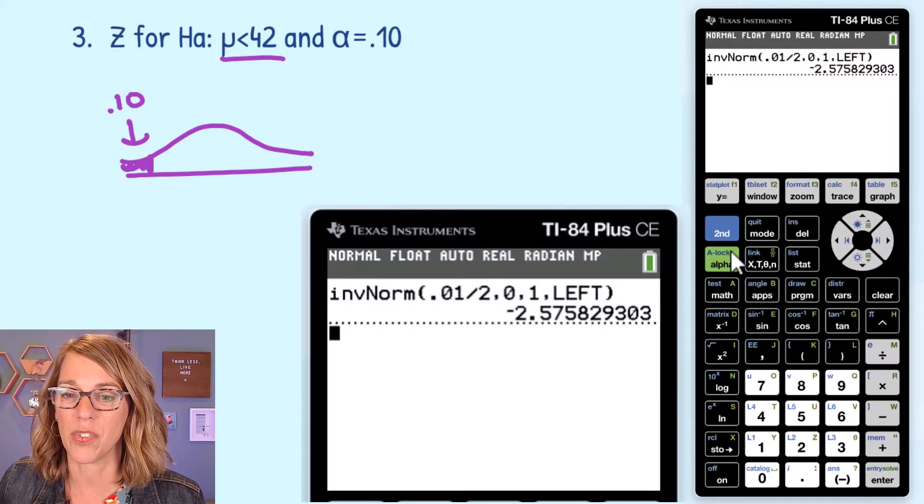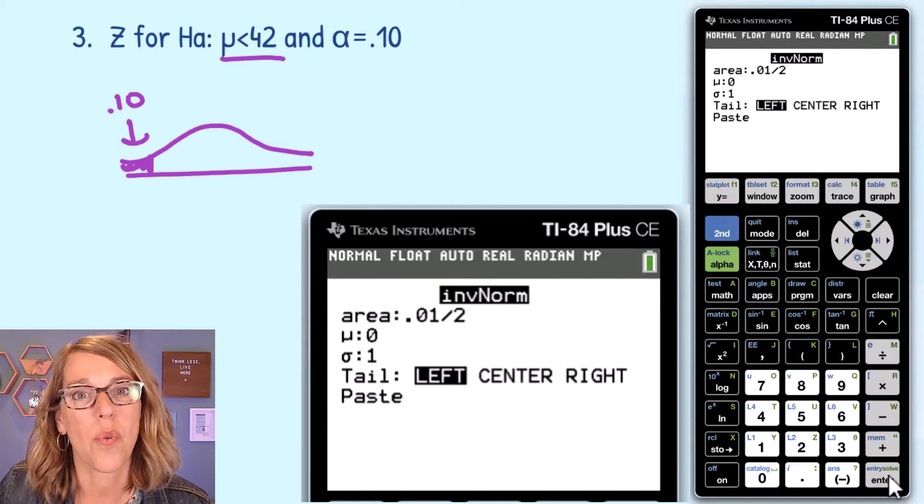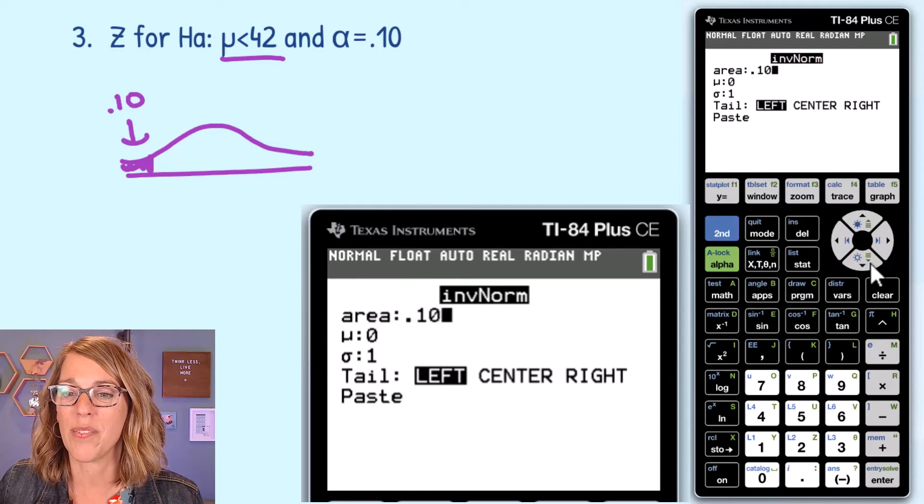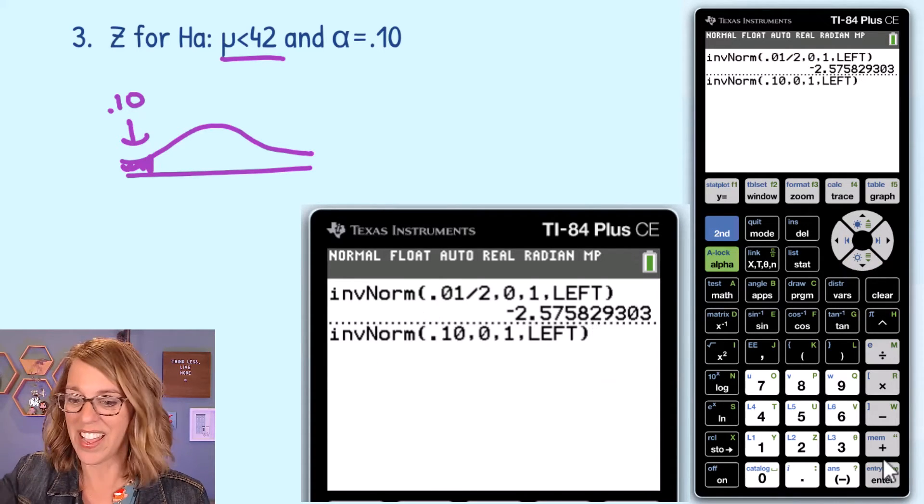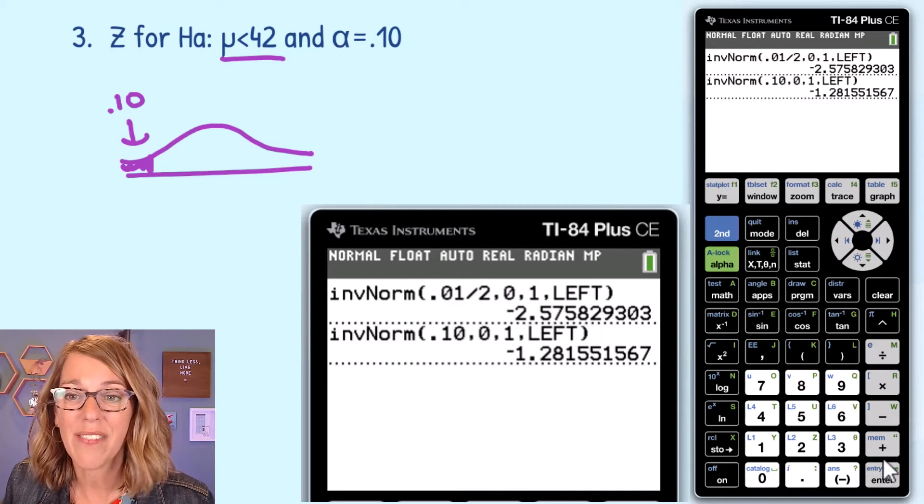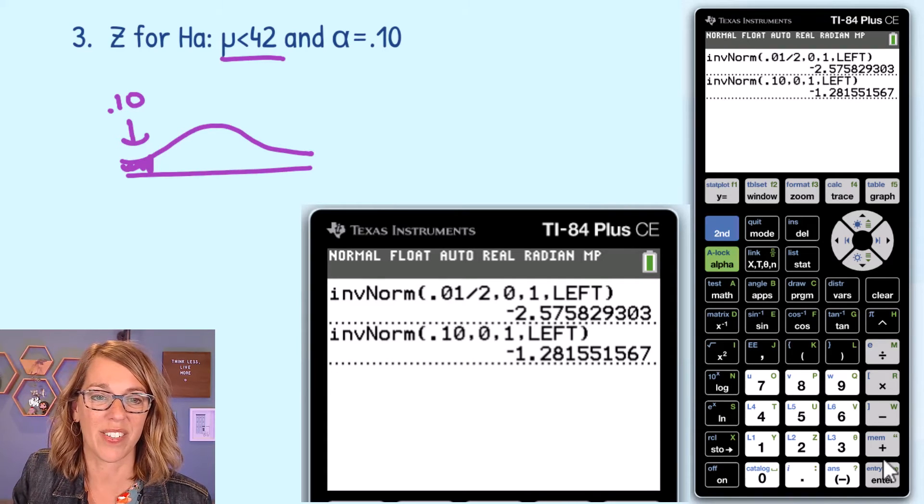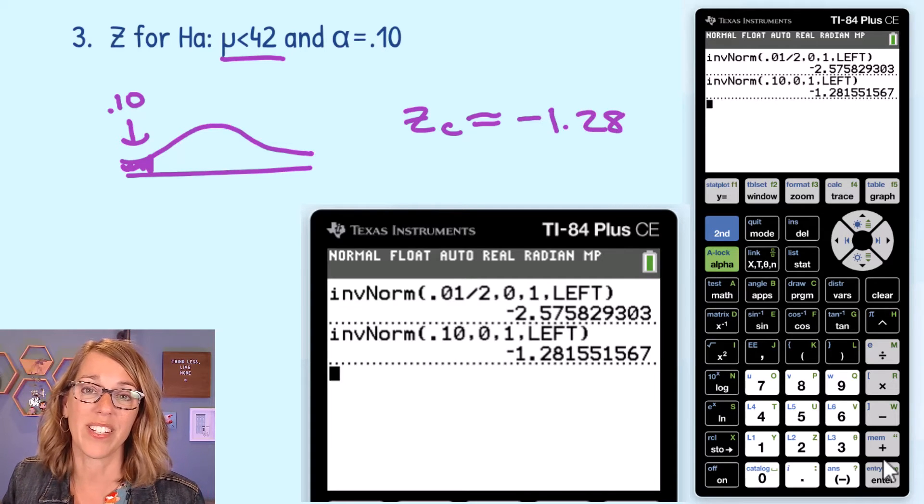I'm going to go to my distribution menu. So 2nd and VARS for distribution. Down to inverse norm. See if you can get this along with me. 0.10. I leave everything else put and then paste. And I get a negative, and I'm going to keep the negative this time, negative 1.28. I'll leave it there. So my critical value here is about negative since I'm on the left, negative 1.28.